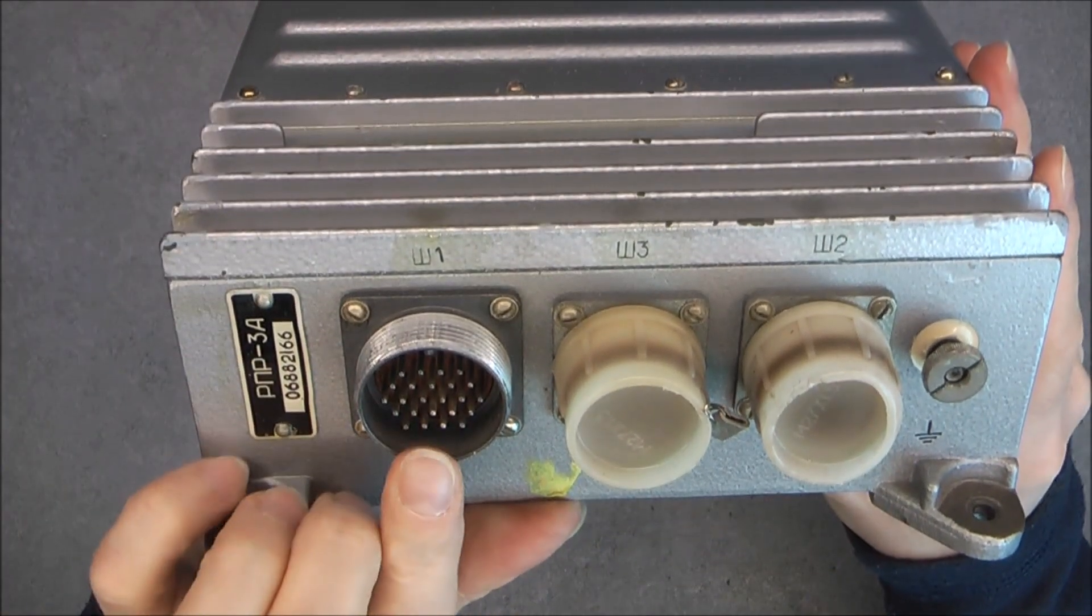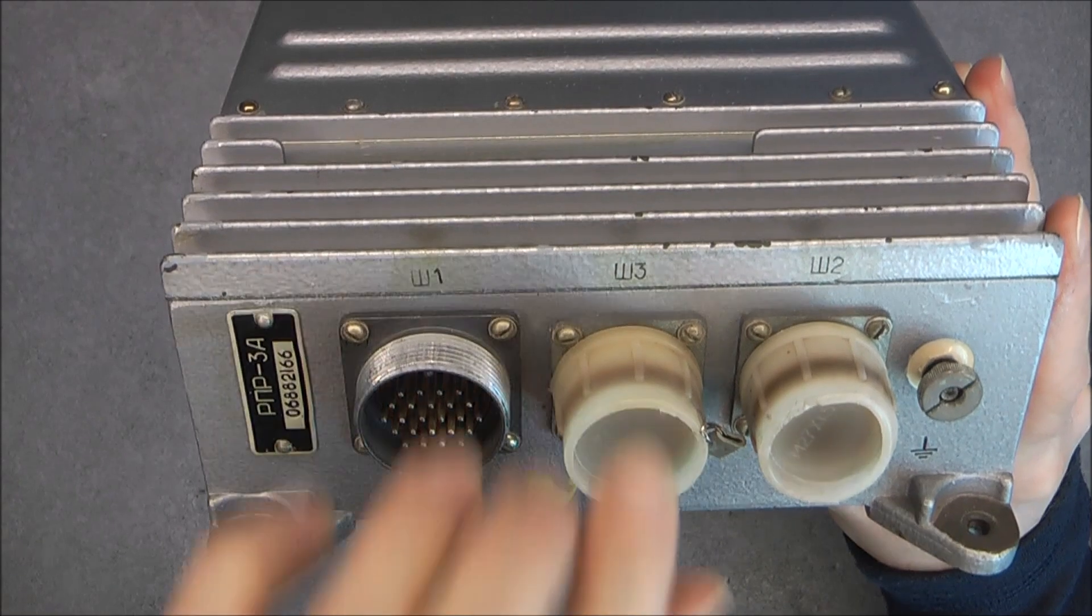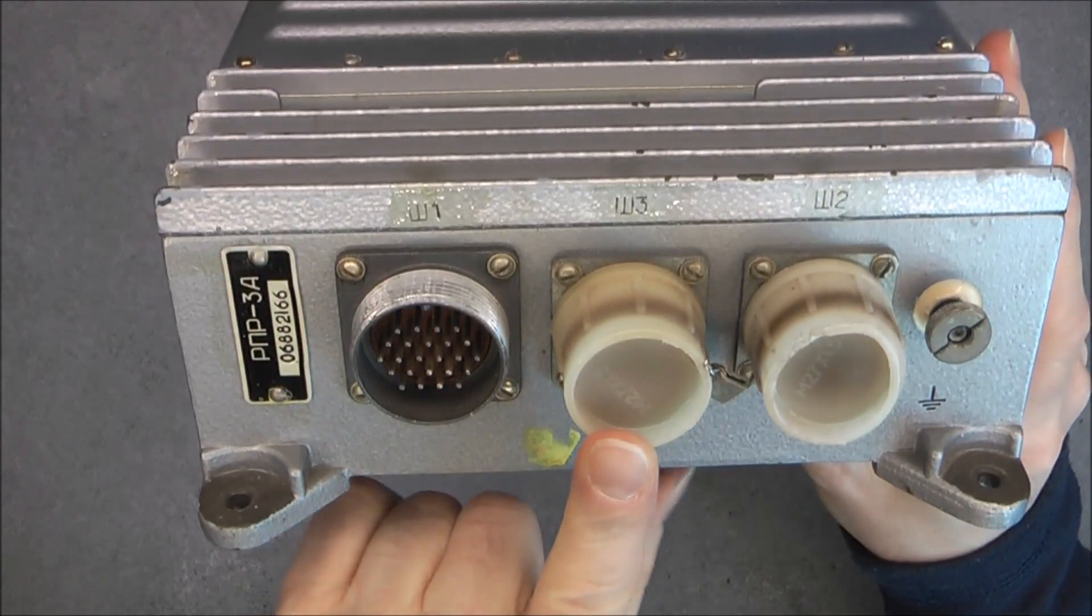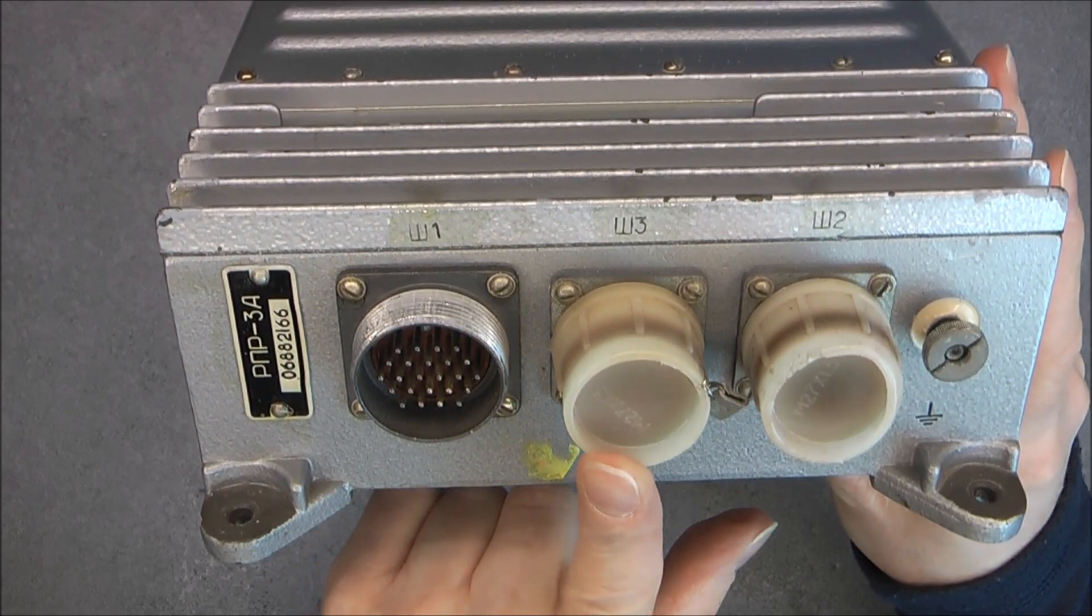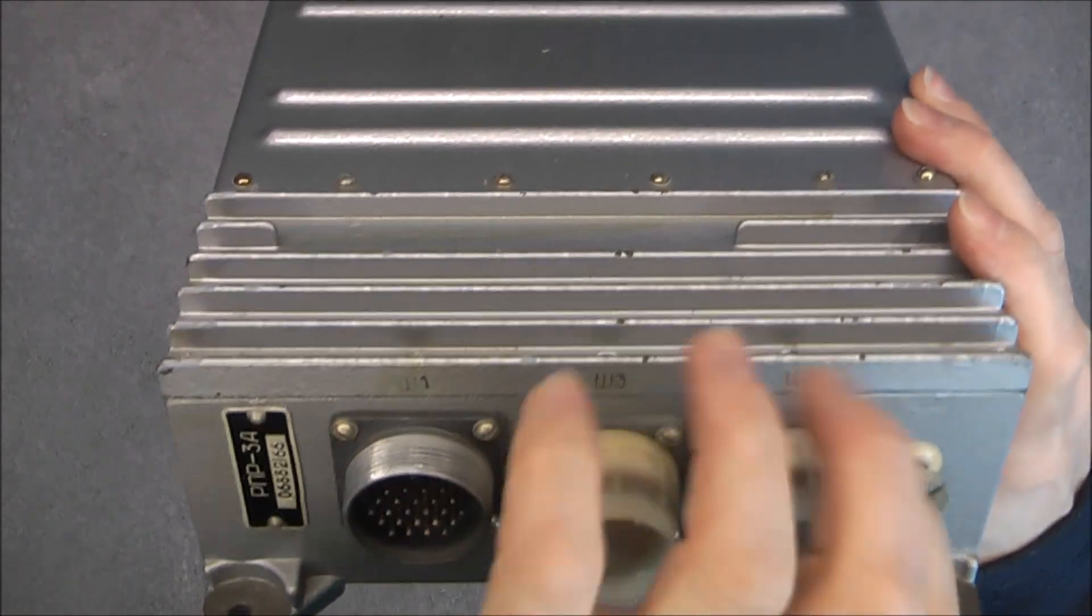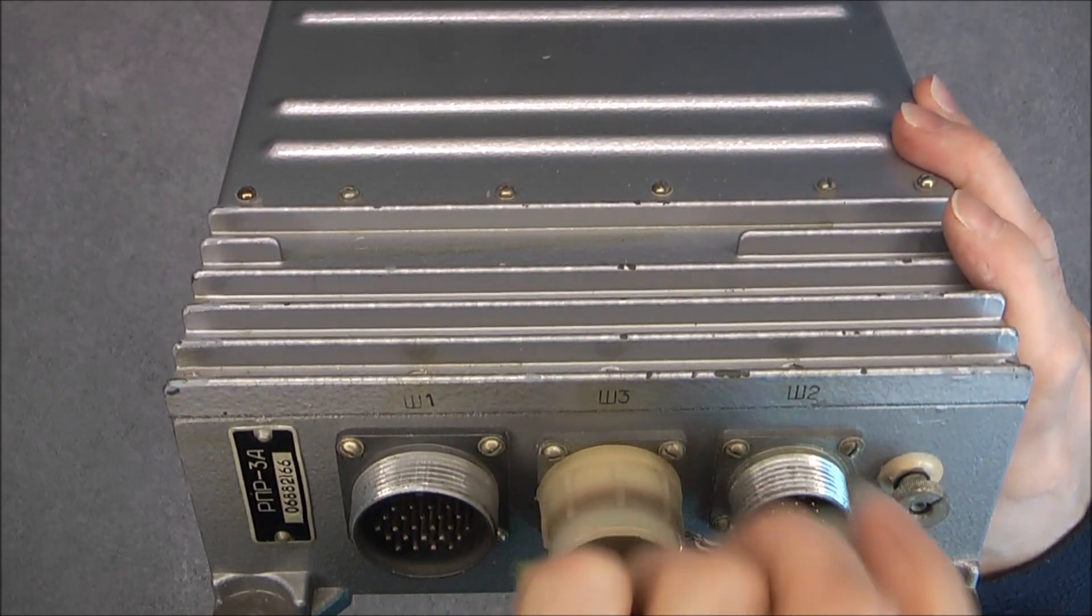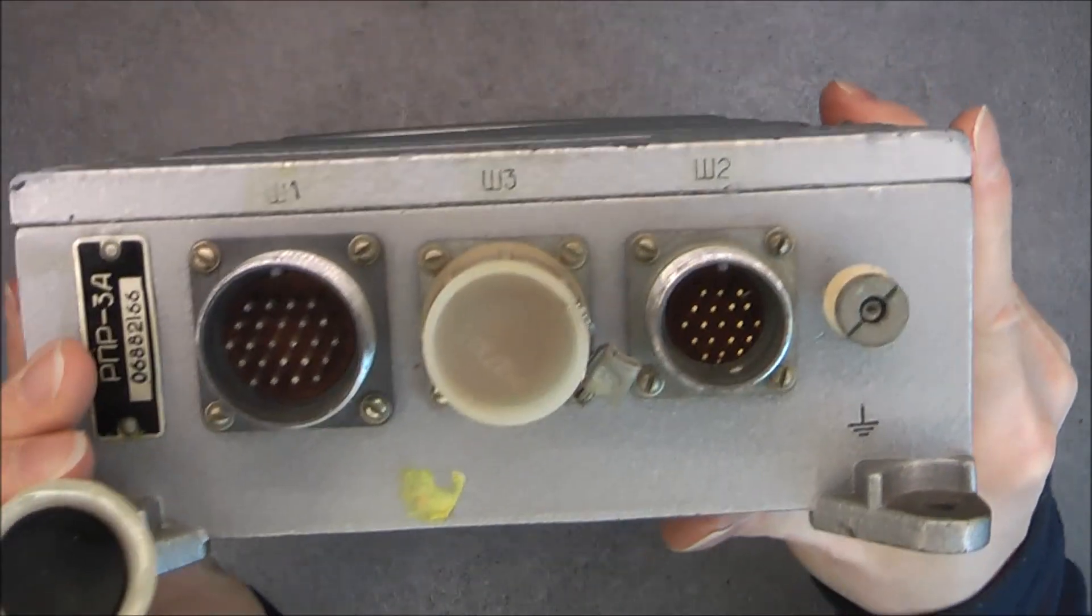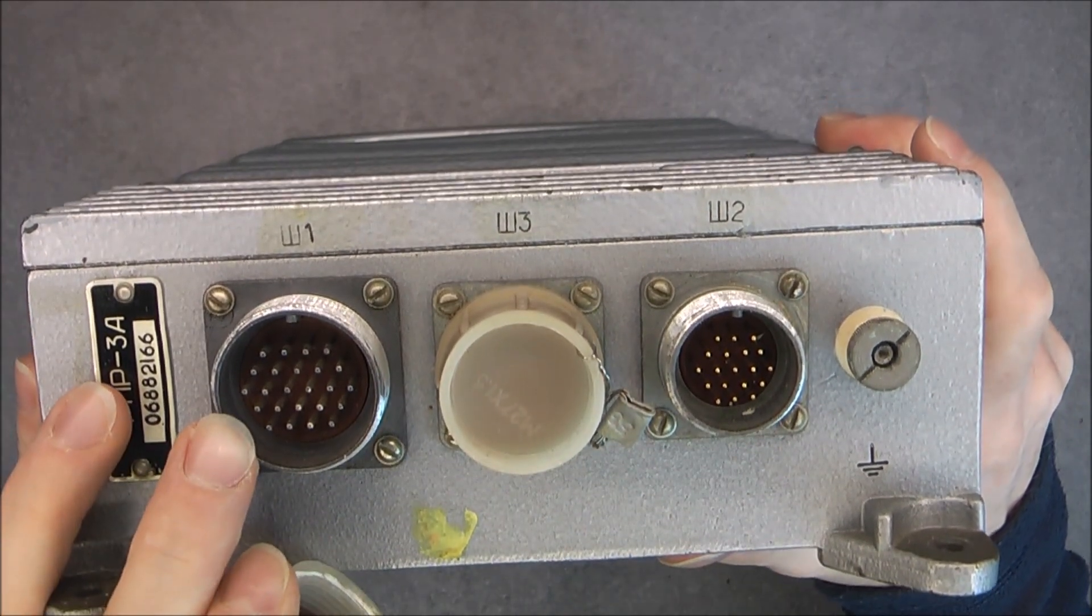You can see we have one first connector here, one here which is secured with a cover and lock wire, so it is probably a test connector but not to be used in normal condition. And this one has also a cover but without lock wire. You can see golden pins on this one while this one has silver pins.